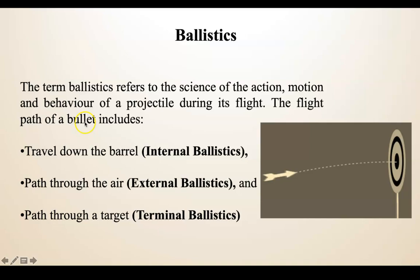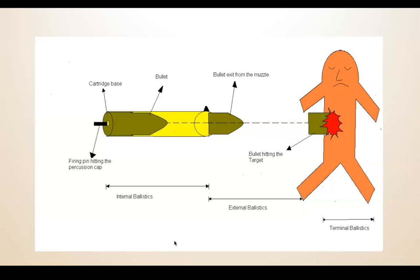Internal ballistics is when the projectile is traveling down the barrel — the barrel can be of any size or diameter. External ballistics refers to the path through the air: when the projectile leaves the muzzle of the gun and travels to the target. Terminal ballistics is when the bullet or projectile moves within the target after impact.